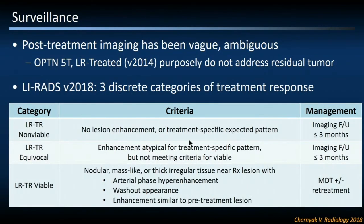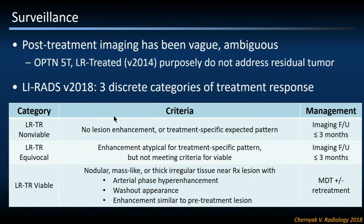Spending the last minute and a half on post-treatment or surveillance imaging — traditionally this has been an ambiguous topic. OPTN calls treated lesions 5T, and prior LIRADS had a simple LR-treated category that did not address the presence or absence of residual viable tumor. In the most recent LIRADS revision, three discrete categories now assess treatment response, providing granularity and management guidance: TR non-viable, TR equivocal, and TR viable — specifically characterized by nodular or mass-like eccentric enhancement in or around the treatment fossa.